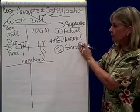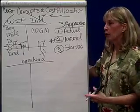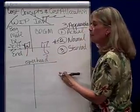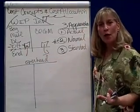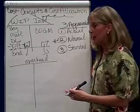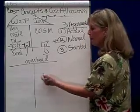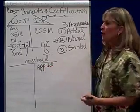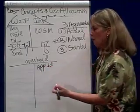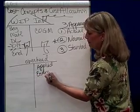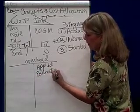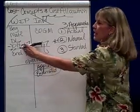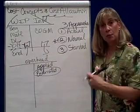Under normal costing, if overhead shows up as a debit in work in process, then it shows up as a credit somewhere else — because for every debit there's a credit. Where it shows up is on the credit side of the account called overhead. So when we apply overhead — meaning it's estimated — it shows up on the credit side of overhead and the debit side of work in process as applied overhead.